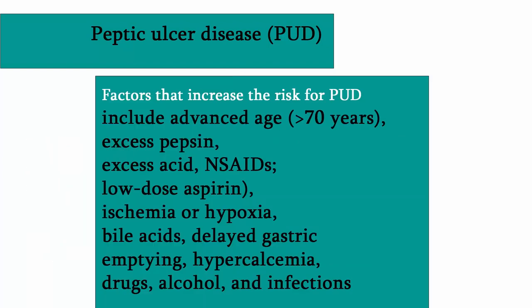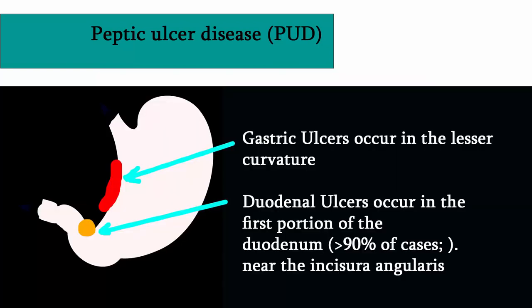Factors that increase risk for peptic ulcer disease include advanced age, excess pepsin, excess acid, non-steroidal anti-inflammatory drugs, low-dose aspirin, ischemia, hypoxia, bile salts, delayed gastric emptying, hypercalcemia, drugs, alcohol, and infections.